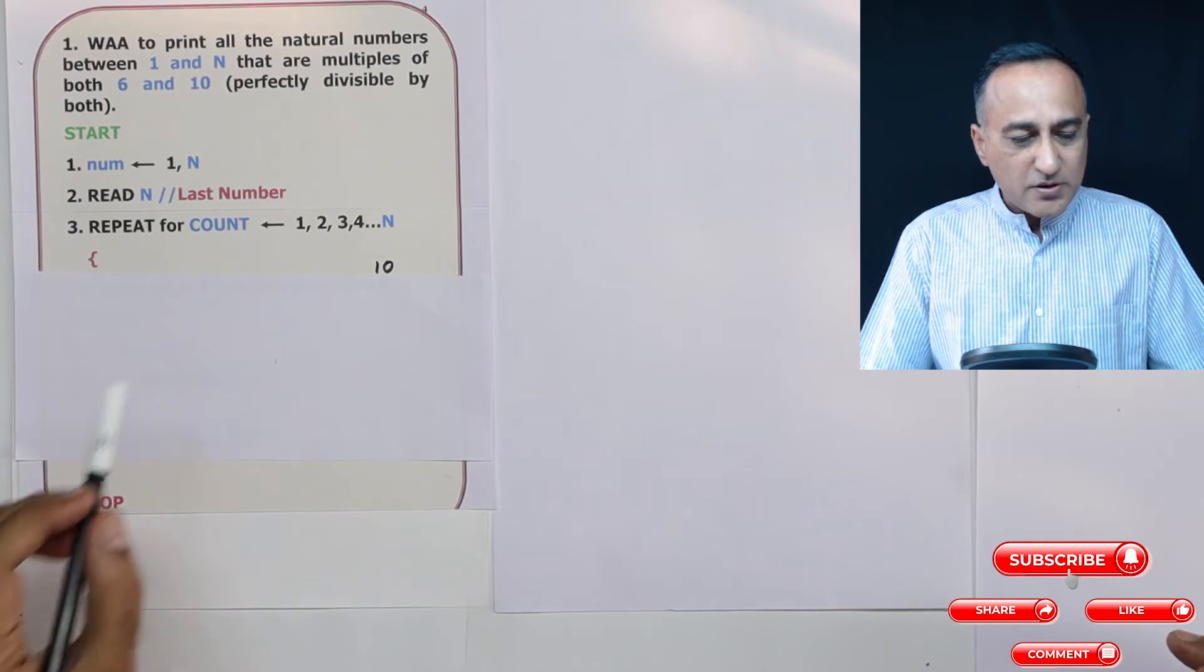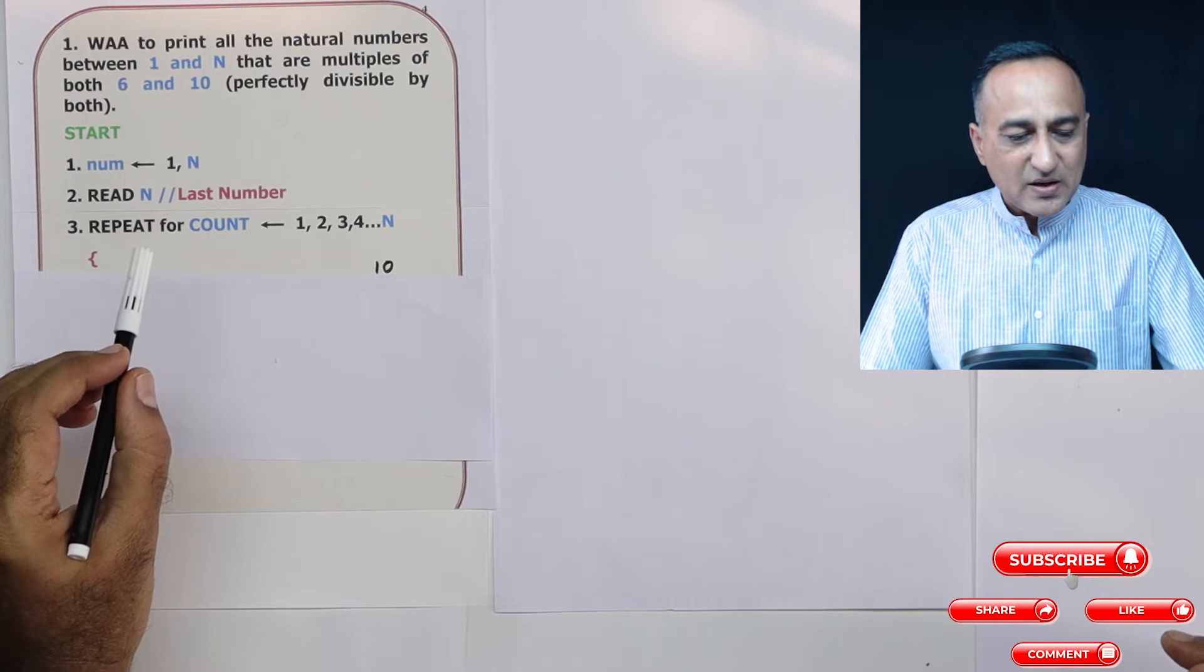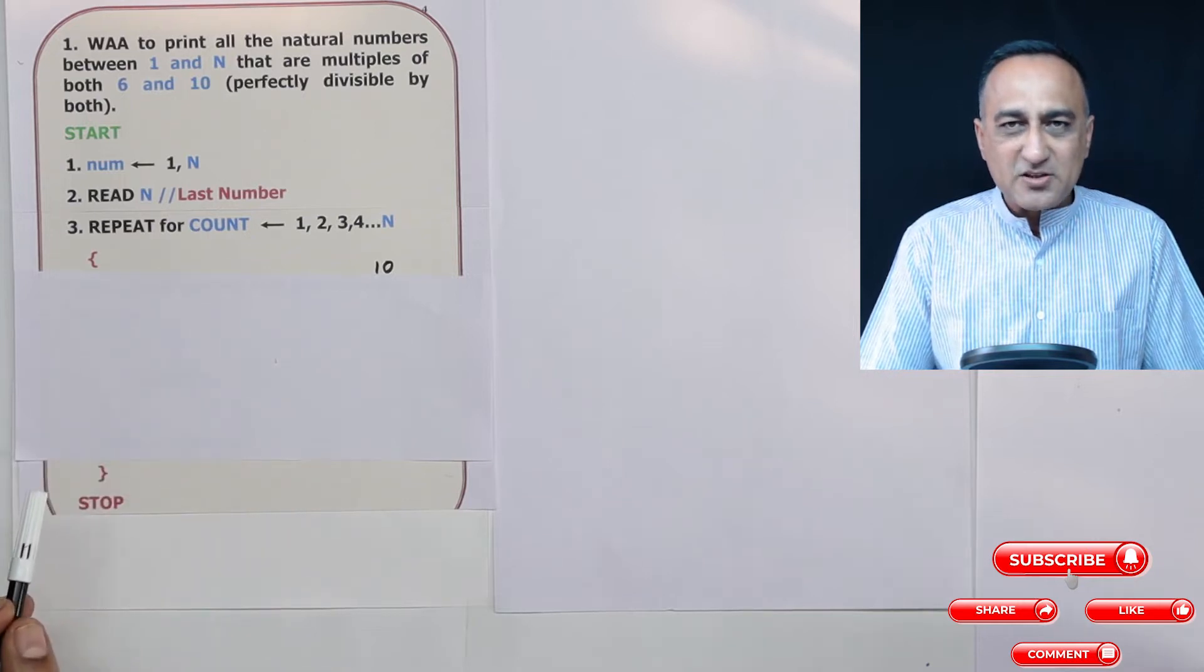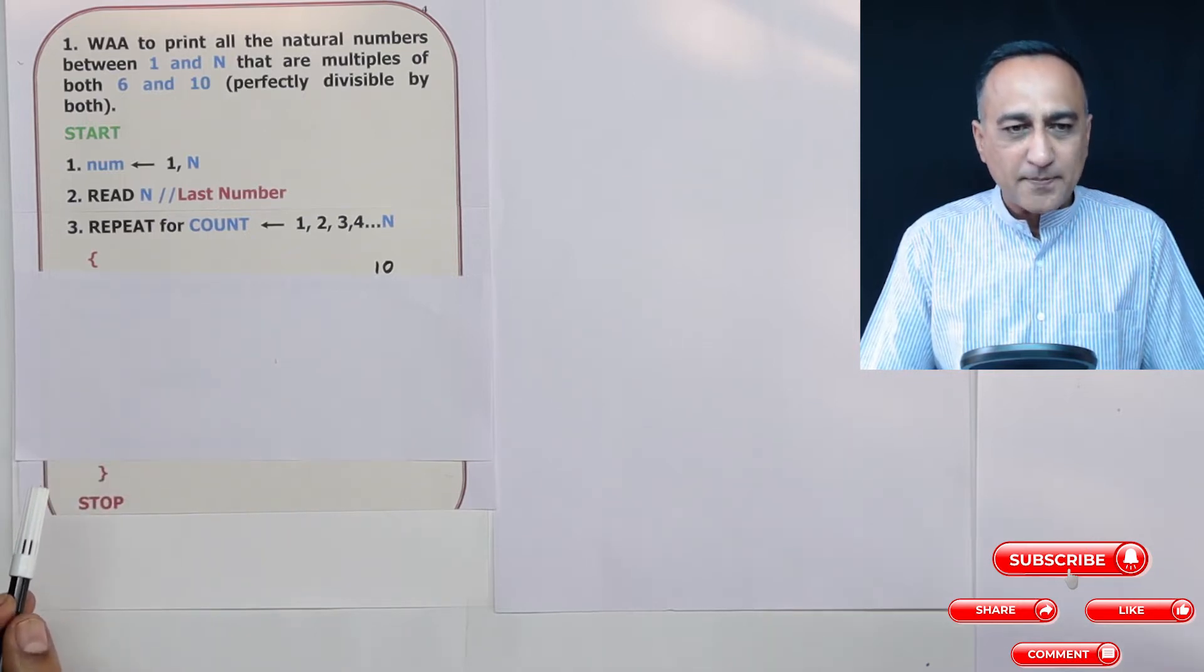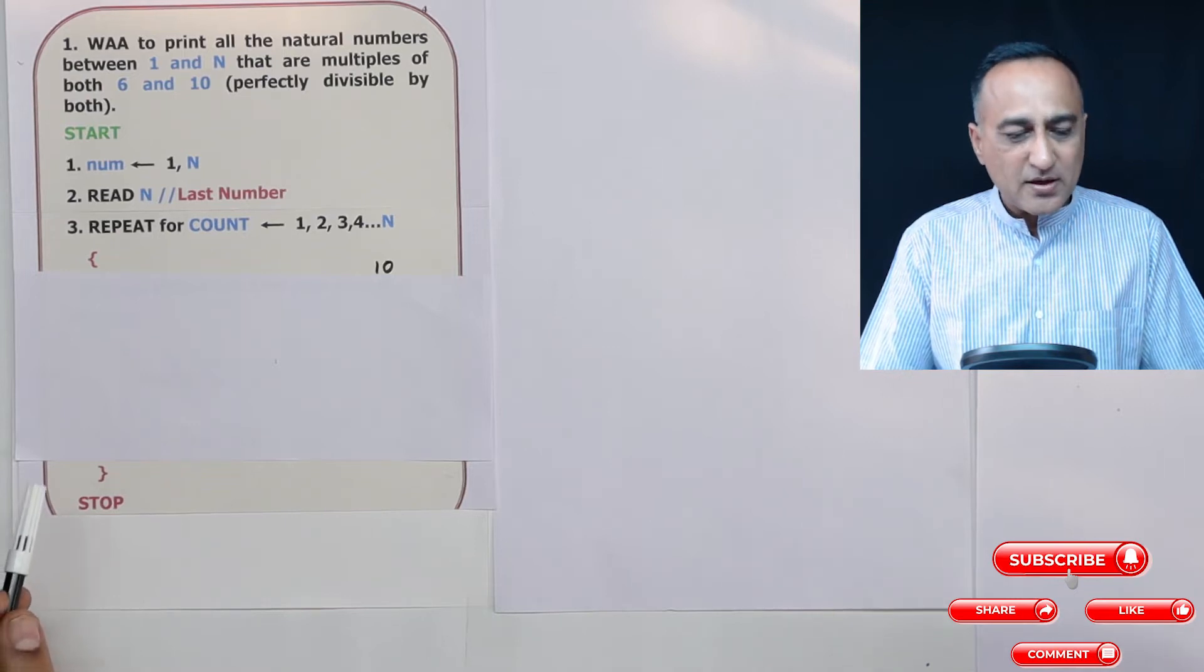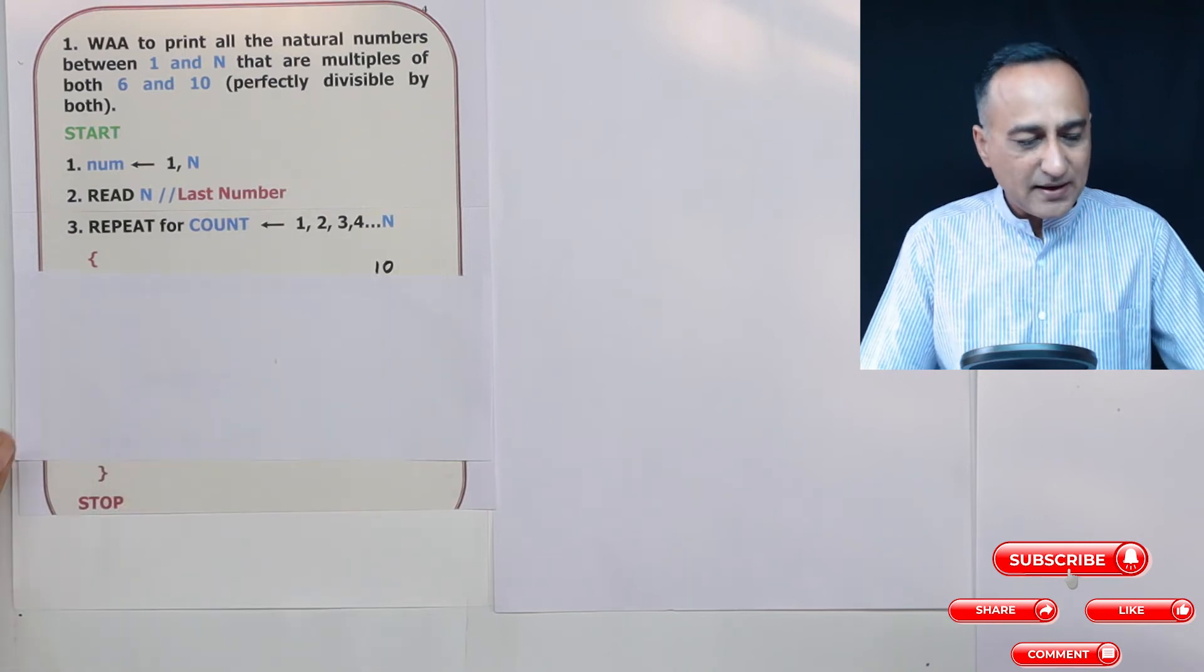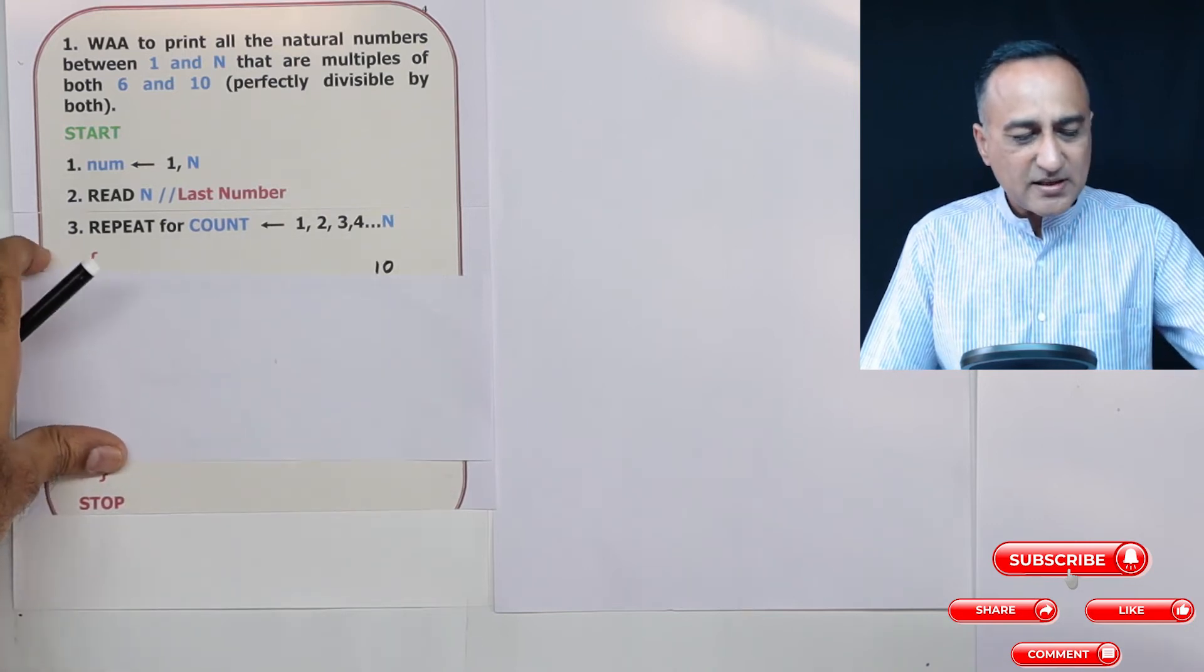So what I will do is when count is one, number is also one. I will say one mod six, is the remainder zero? No, remainder is one. One mod ten, is the remainder zero? No, remainder is one. So it will go to count is two, count is three, four, all the way till n. Let's try to understand the logic.